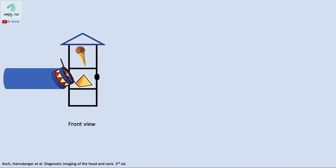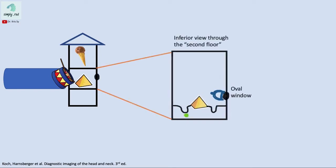Now let's look at the residents of the second floor. Looking at the second floor from below, we see a pyramid called the pyramidal eminence. It has depressions on both sides. On this cut, in just a few adjacent slices, we can also see the stapes. We'll discuss the important relationship of the stapes and the pyramidal eminence shortly.